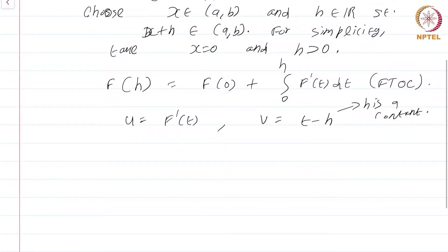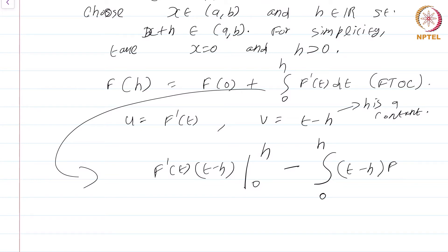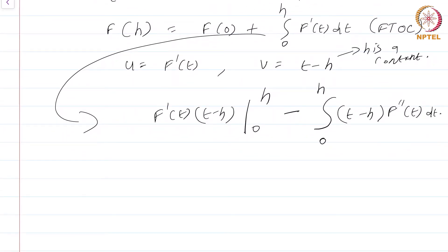Integration by parts gives that this is u·v = f'(t)·(t − h) evaluated from 0 to h, minus the integral from 0 to h of v du, which is (t − h)·f''(t) dt. This is just standard integration by parts applied with the notation familiar from high school.